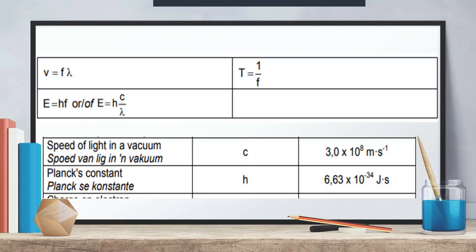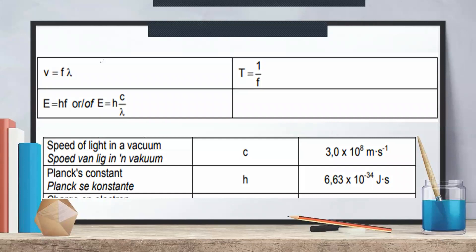In this topic, v equals f times lambda. That's the first formula. V is wave speed, in meters per second. F is frequency — frequency means number of waves in one second, unit is hertz (Hz) or second to the power of negative one. Lambda is wavelength, in meters.